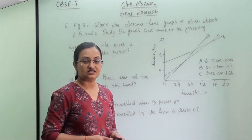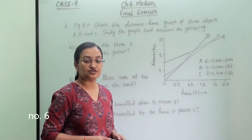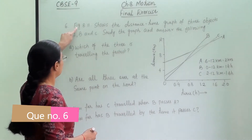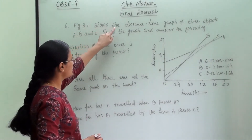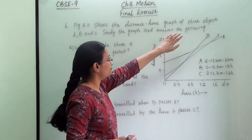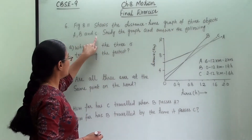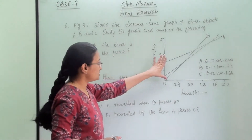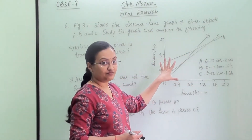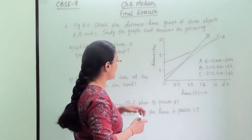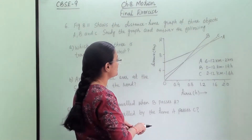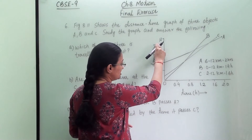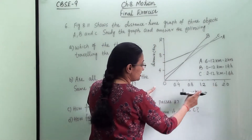Question number 6 is based on the graph. Figure 8.11 shows the distance-time graph of three objects A, B and C. Study the graph and answer the following. The y-axis shows the distance — 4, 8 and 12 km — and the x-axis shows the time.